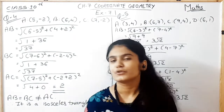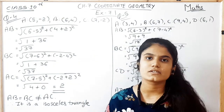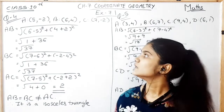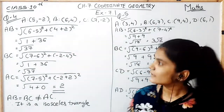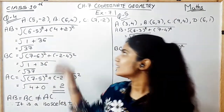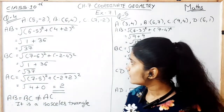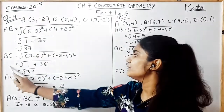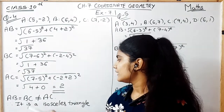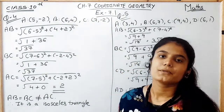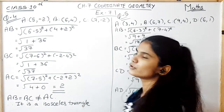In question number 4, we have to prove whether the given points form an isosceles triangle or not. The coordinates of A, B, and C are given. First, we find the distance AB using the distance formula, then BC and then AC. Here, the distance between AB and BC is the same. Therefore, it is an isosceles triangle, because two sides of the triangle are equal and the third is different.